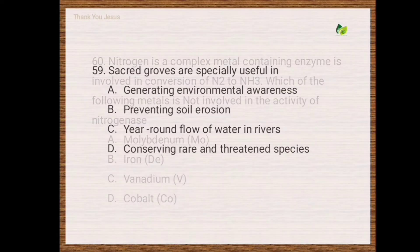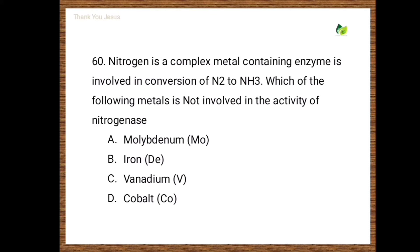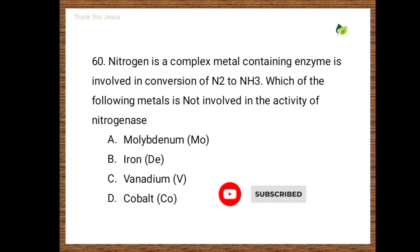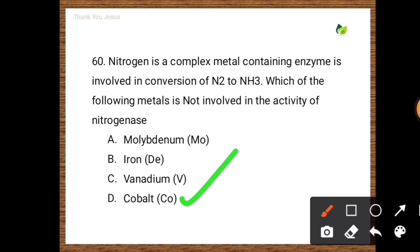Next question: Nitrogenase is a complex metal-containing enzyme involved in conversion of N₂ to NH₃. Which of the following metals is not involved in the activity of nitrogenase? Options are molybdenum, iron, vanadium, cobalt. The correct option is the last one, that is cobalt.